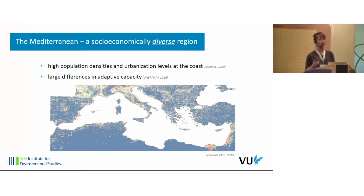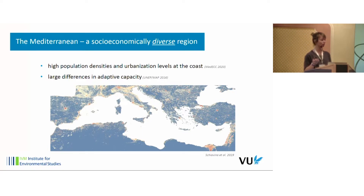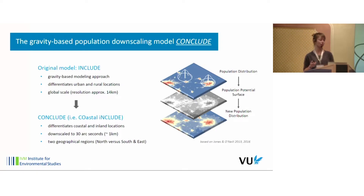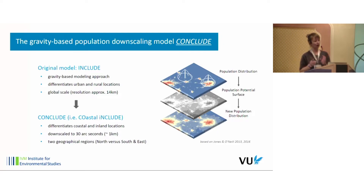The approach I used is the gravity-based modeling approach, mainly developed by Brian Jones and Brian O'Neill over the last roughly ten years. The gravity-based approach assumes that areas that are densely populated are more attractive for human settlement than areas that are less densely populated, and that this attractiveness decreases with increasing distance from those places. The model uses a distance decay function with which we can determine the attractiveness of any given place in space.